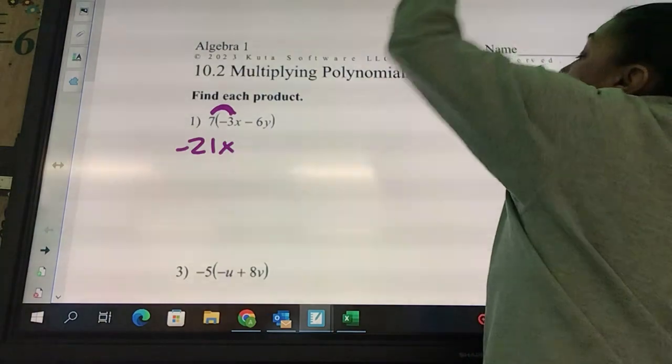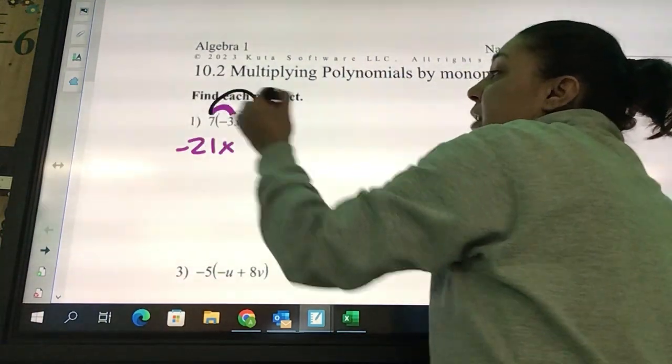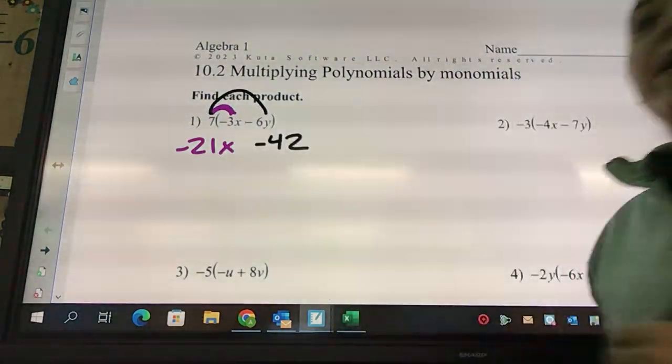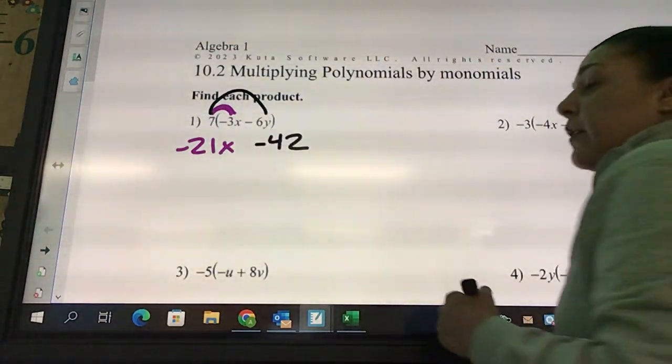Moving on to the second piece, I got seven times negative six is negative 42. How many y's are there? One.